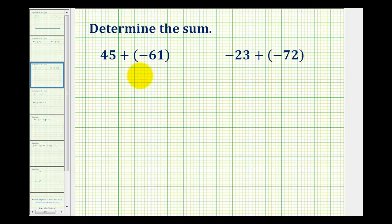I wanted to take a look at two more examples of adding integers when we have two-digit integers. Looking at our first example, we have positive 45 plus negative 61.